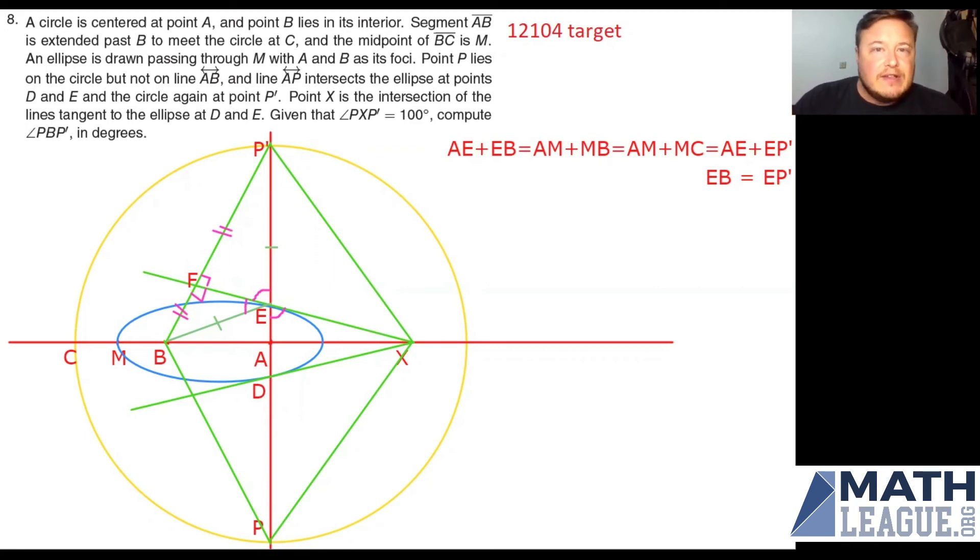Now, what that tells me is that I have a different pair of angles now that are congruent to each other. This angle and this angle are now congruent. But wait a minute. I know something about those angles. We have the entire angle PXP prime was 100 degrees, which means that P'XA is going to be half of that by symmetry, 50 degrees, but then I split it into two equal parts, and what that tells you is that this angle is 25 degrees. Now, if this angle is 25 degrees, so is this one.